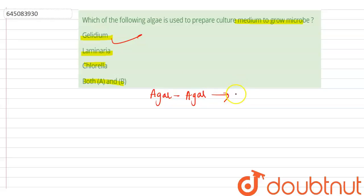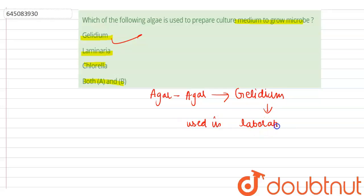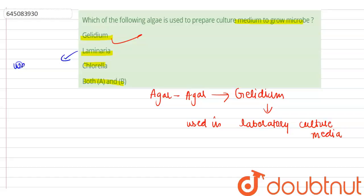Agar-agar obtained from the algae gelidium is used in laboratory culture media to grow microbes. So the correct option is gelidium. The other options are incorrect because laminaria algae is used for weight loss and high blood pressure.